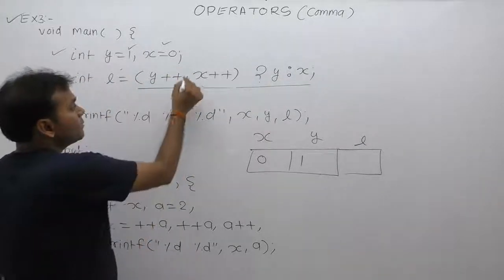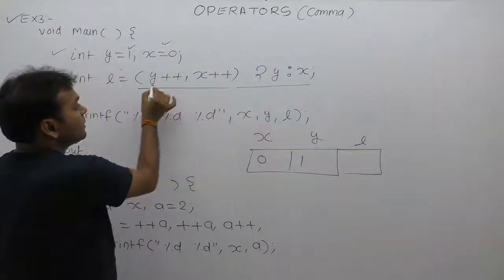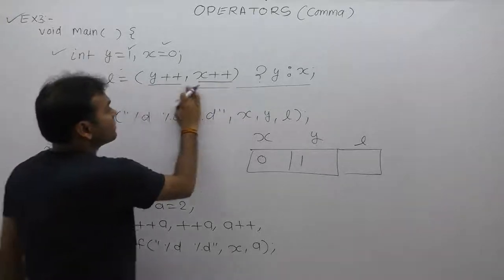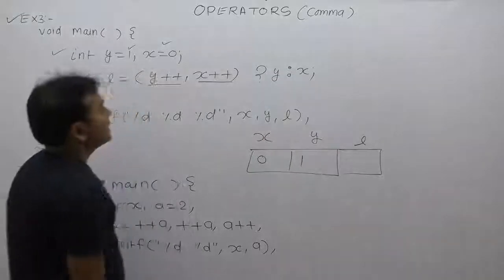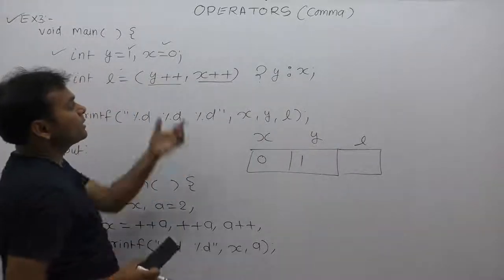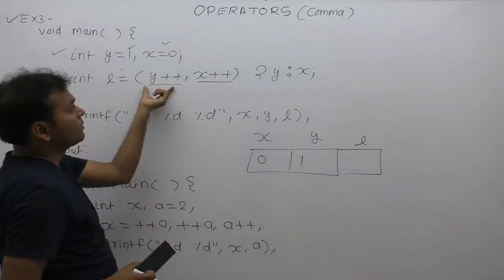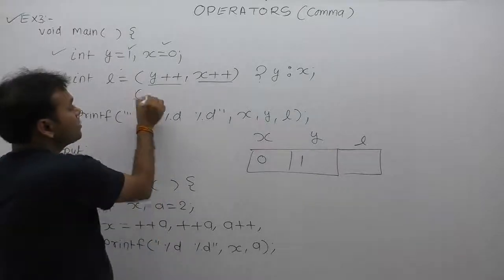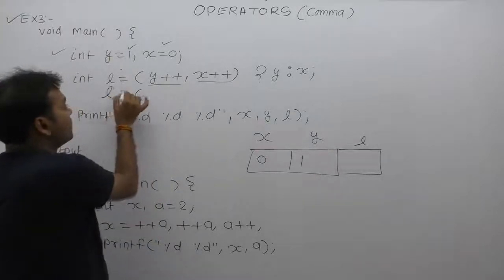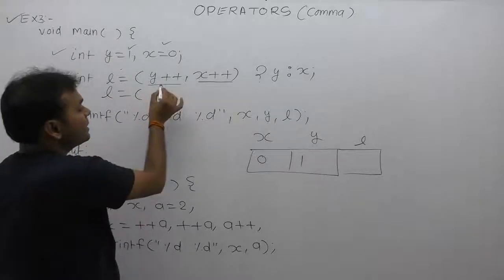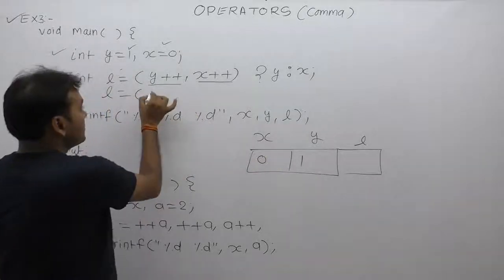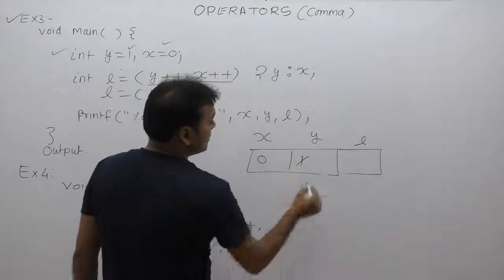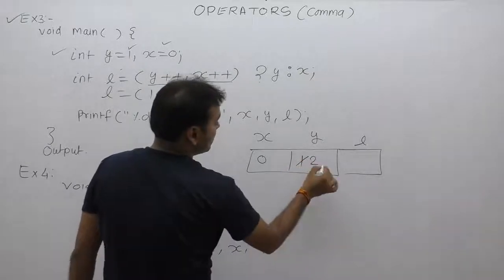In the case of the comma operator, we are supplying two expressions: y++ and x++. The comma operator evaluates left to right. First, y++ — since we are using post-increment, first the value of y, which is 1, is used for replacement. After that, y is incremented by 1, so it becomes 2.